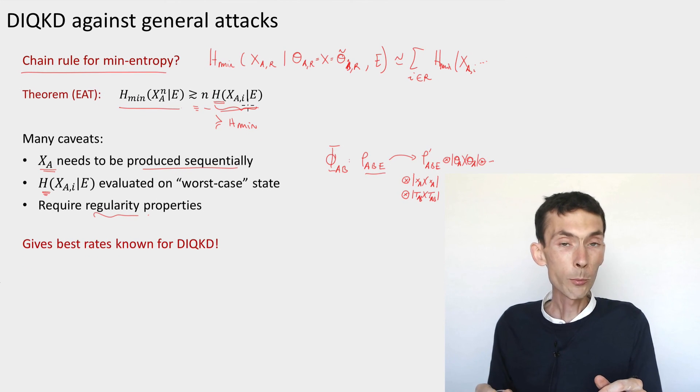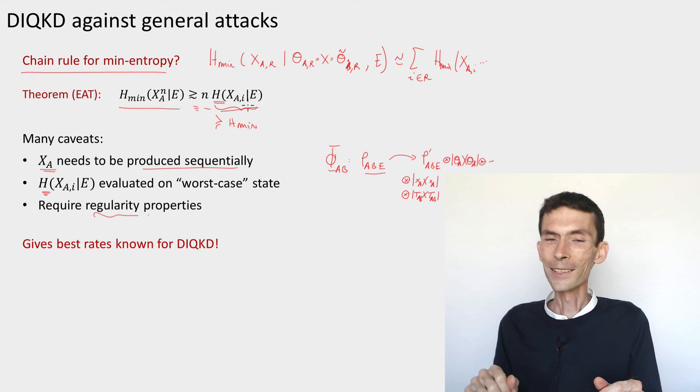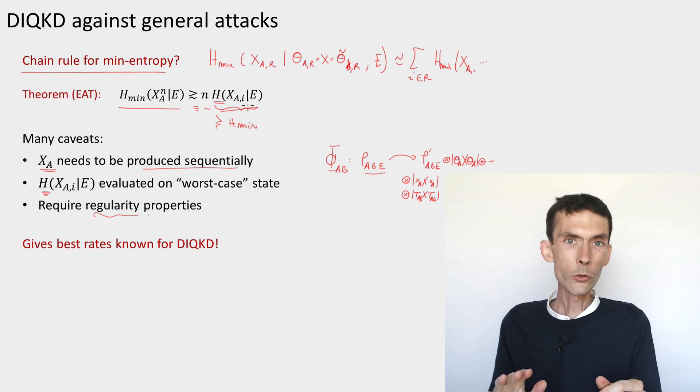There's some regularity properties on how this entropy here behaves in some additional conditions. Okay, so there's a lot of conditions to verify, but the upshot is that these conditions can be verified, I promise, in the case of the device independent protocol that you've seen so far, and once you verify these conditions, you get a very good key rate.